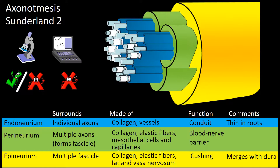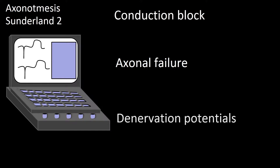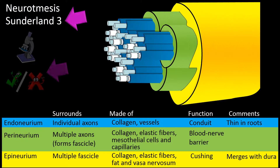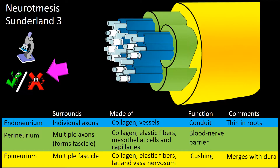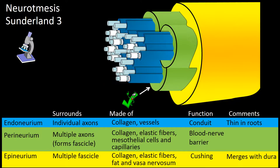These findings depend on the time of the study in relation to the time of injury. They may consist of conduction block very early on and axonal failure a little bit later, as well as denervation potentials. Neurotmesis falling in Sunderland type 3, when studied by light microscopy, involves axonal pathology, myelin pathology, and endoneurium pathology, but the perineurium and epineurium are not involved.